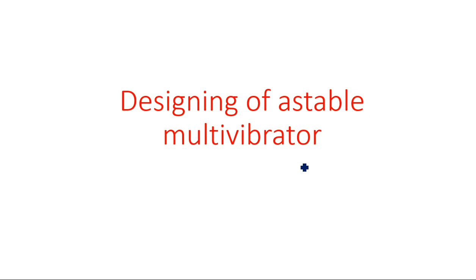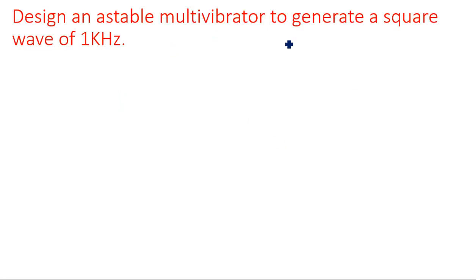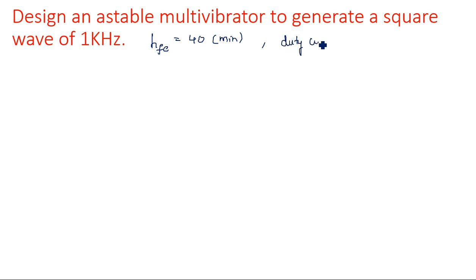Hi everyone, let us see the designing of an astable multivibrator, which is the second problem in the designing part. In the previous video I discussed designing an astable multivibrator using a square waveform of 1 kilohertz. Here the same example is considered, along with HFE minimum value of 40 — which is the minimum beta value — and a duty cycle of 25%.